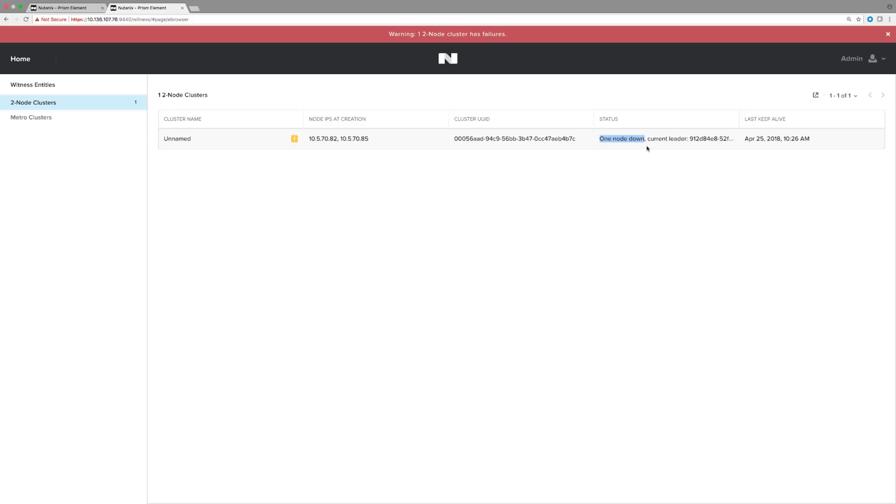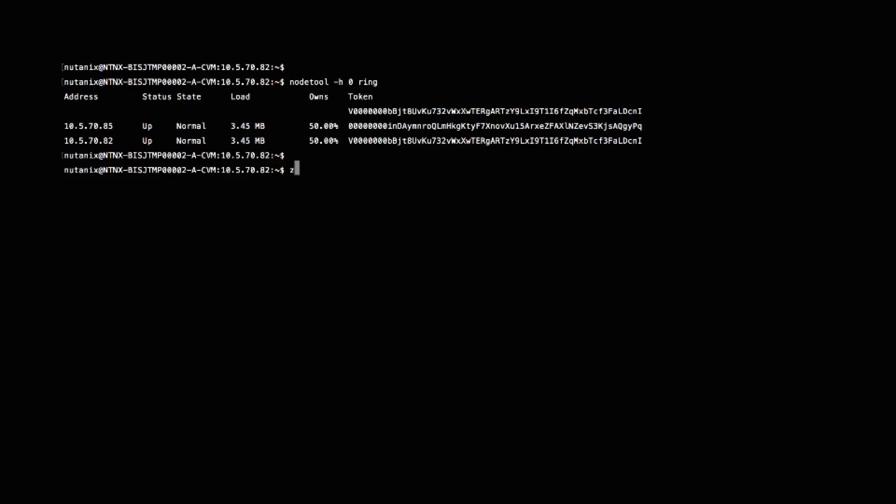So now the transition to single node mode can take up to 30 to 60 seconds. The client VMs can experience IO timeouts during this period and Prism will also be inaccessible for a bit. Jumping back to node A.